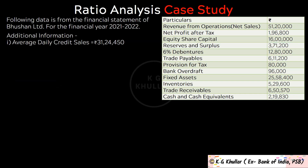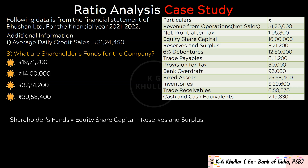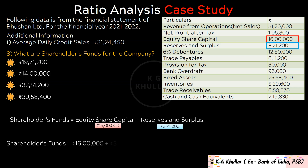The next question is: What are shareholders funds for the company? Shareholders funds are simply equity share capital plus reserves and surplus, which is Rs. 16,00,000 plus Rs. 3,71,200 equals Rs. 19,71,200. The correct option is option A.